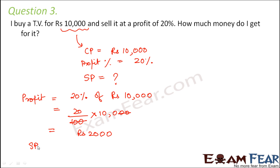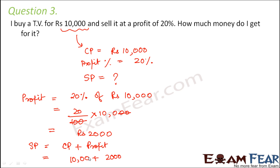Once you know the profit, you can find the selling price. Selling price equals cost price plus profit, that is CP plus profit. So the cost price is 10,000 plus the profit of 2,000, which equals rupees 12,000. So rupees 12,000 would be the selling price for the TV.